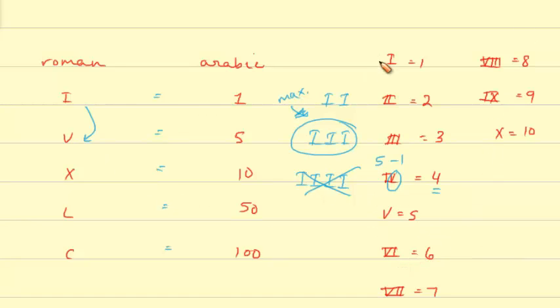And then once again, you go back to adding things like you did with 9. So VI is 6, VII is 7, VIII is 8, and then once again, you come to 9.